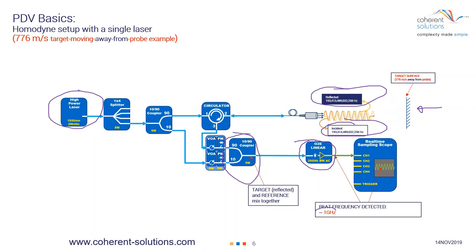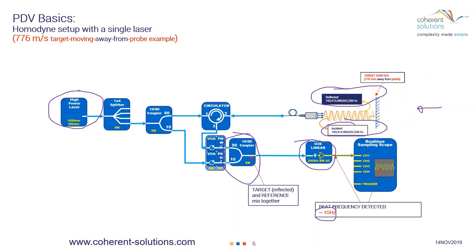As you can see from this homodyne setup, you cannot tell the difference between a 1 gigahertz beat frequency from a target moving towards the probe or away from the probe. This is one of the weaknesses of homodyne setups, and also one of the weaknesses of starting with zero beat frequency.